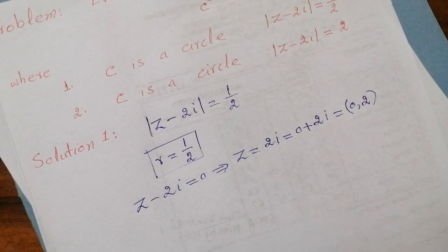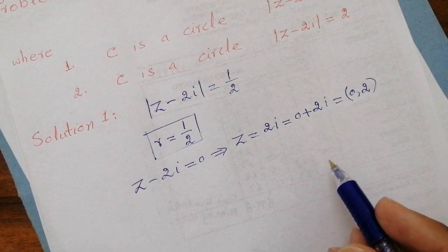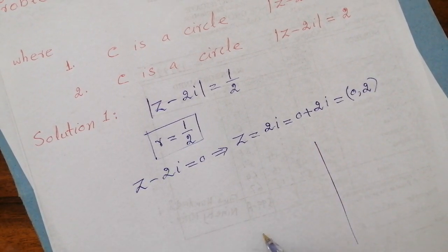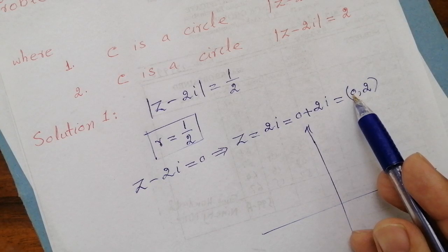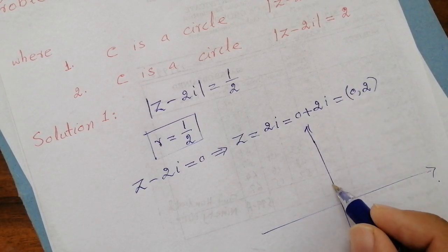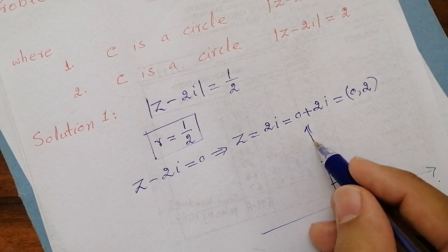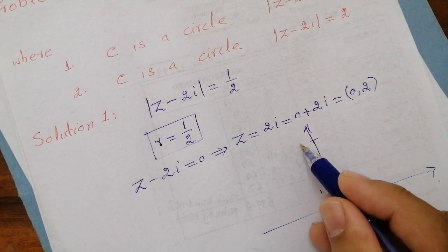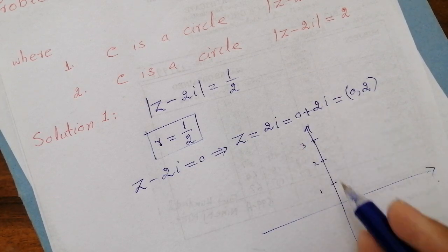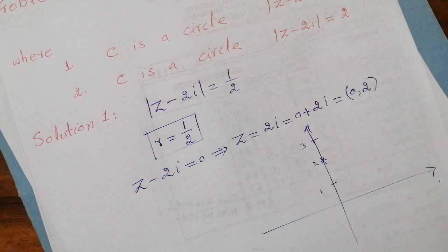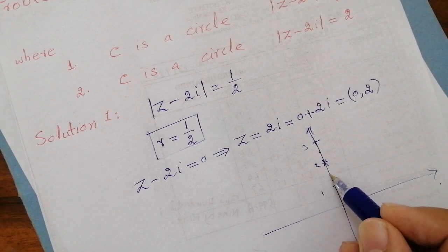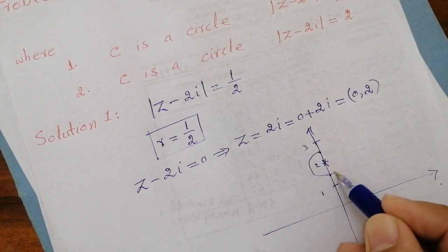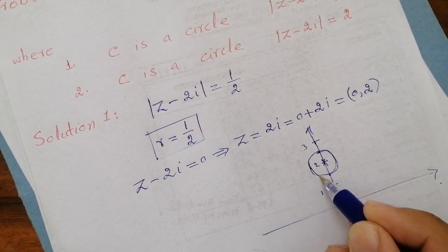Now we draw this circle. The real axis is horizontal and the imaginary axis is vertical. The center is at (0, 2) — x is 0 and y is 2. Marking 1, 2, and 3 on the imaginary axis, the center is at position 2, and drawing the circle we get a small circle of radius 1/2 centered there.